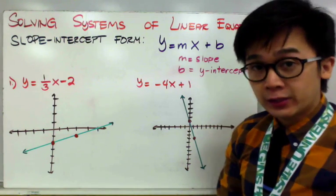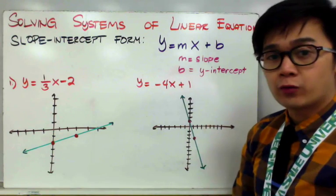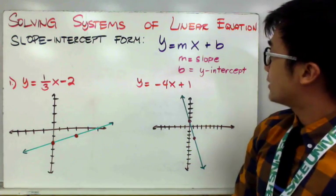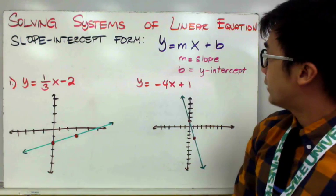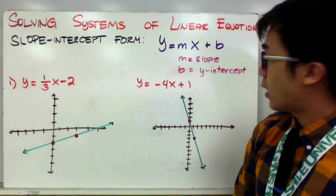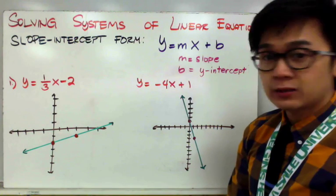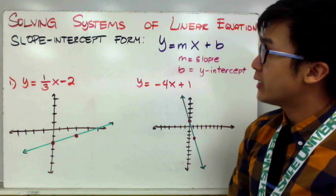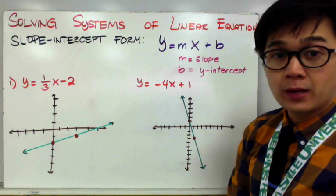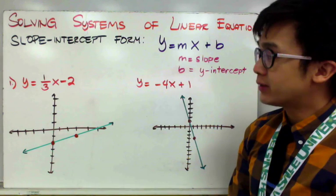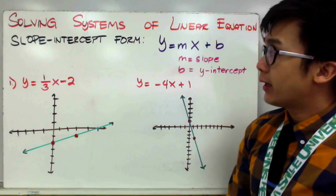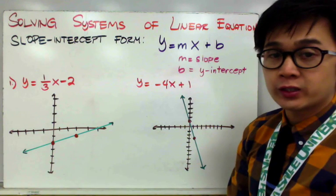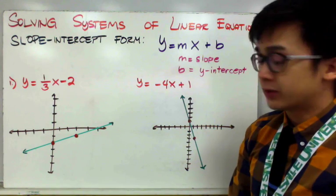The slope-intercept form is given by the formula y equals mx plus b, where m is our slope and b is our y-intercept. In our previous lesson, we were able to graph linear equations using this form, and we're going to use this skill in solving for the solution of a linear system using this method.